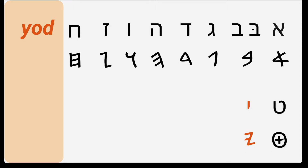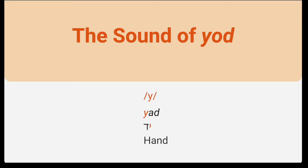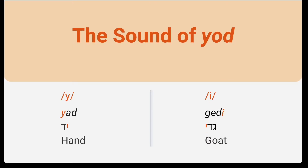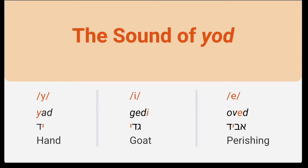After that comes Yud, which makes the Y sound like in the color 'yellow' or like in the Hebrew word for hand, Yad. It can also be a vowel marker for the I vowel like in the word Gdi — similar to the I vowel in 'machine' — Gdi, meaning 'goat.' And it can also indicate the E sound like in 'obey,' or in the Hebrew word Oveid, meaning 'perishing.'